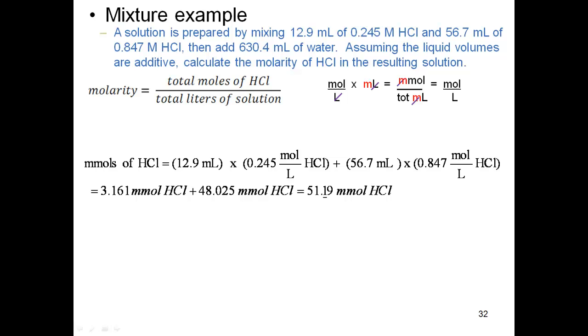See right here, 12.9 times my 0.245 moles per liter. Multiply those two together, my liters will cancel, leave me in millimoles - gives me 3.161 millimoles of HCl. Do the same thing with the other component - 56.7 milliliters times my 0.847 moles per liter. Liters cancel, leaving me in millimoles, which is 48.025 millimoles of HCl.